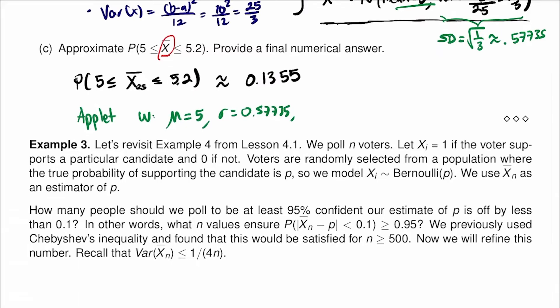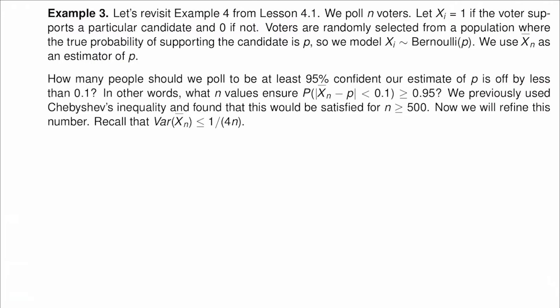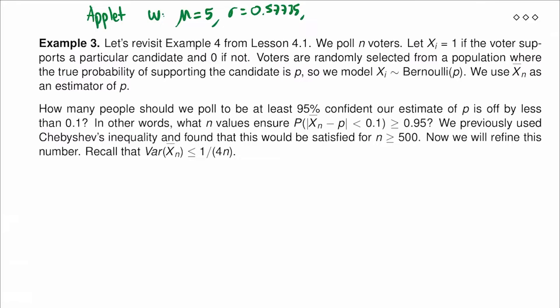For the final example, let's revisit example 4 from lesson 4.1. We poll n voters and let xi = 1 if the voter supports a candidate and 0 if not. The voters are randomly selected from a population where the true probability of supporting the candidate is p. We model xi as Bernoulli(p) and use x̄_n as an estimator of p. Previously using Chebyshev's inequality, we found n ≥ 500 is sufficient.